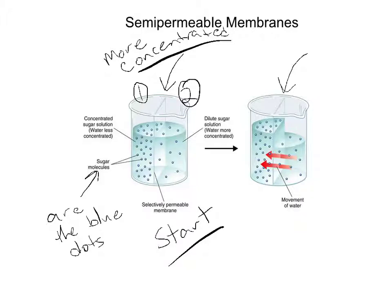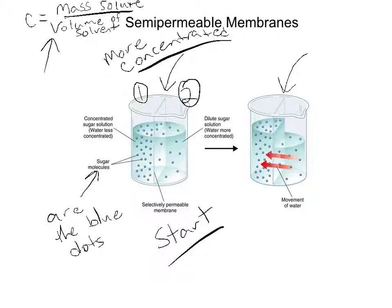You have to remember what concentration is. Concentration is the mass of the solute divided by the volume of the solvent. You'll agree that on side one there are many more blue dots for the same volume than on side two — hence, a higher concentration of sugar on side one than on side two.